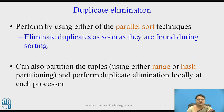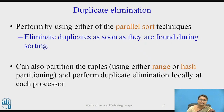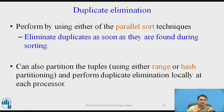Talking about the next operation — duplicate elimination — the approach is simple: first, sort the entire relation using a parallel sorting technique, such as range partitioning sort or external merge sort. Parallelly the entire relation is sorted, and duplicates are eliminated as soon as they are found during sorting. Duplicate elimination is done locally at each processor because every processor participates in sorting and automatically removes duplicates at every partition.